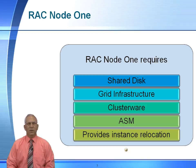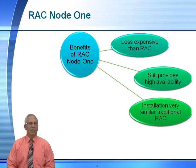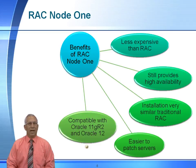The installation is going to be very similar to traditional RAC. The only difference is we only have one active node, and it is going to be less expensive. It still provides high availability with no more than a guaranteed 15-minute downtime. If you're familiar with the installation of traditional RAC, you can easily install RAC 1 Node because they're virtually identical. It's easier to patch servers because you can patch the passive node, fail over to it, patch the active node, and then fail back. It is totally compatible with Oracle 11GR2 as well as 12c. RAC 1 Node was originally introduced in Oracle 11GR2.